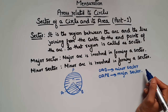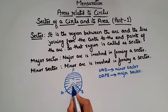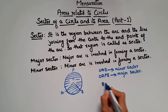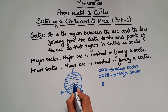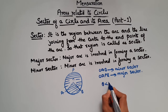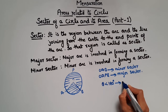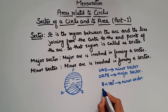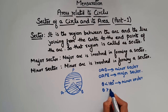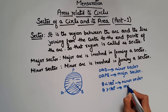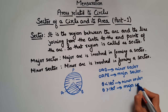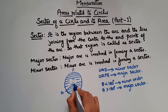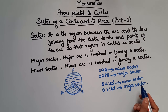This can also be defined in terms of theta. If the angle subtended by a sector is less than 180 degrees, it is called a minor sector. If the angle theta — the angle subtended by a sector — is greater than 180 degrees, then it is called a major sector. Theta here is the angle at the center for the respective sector.